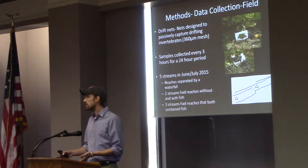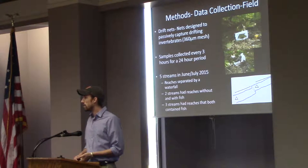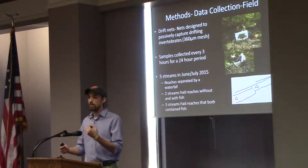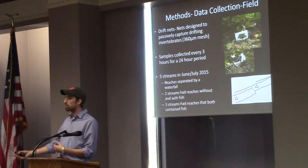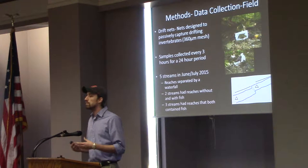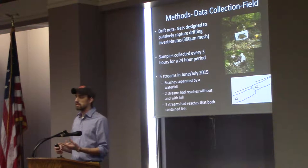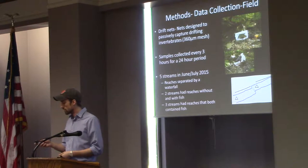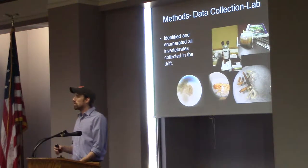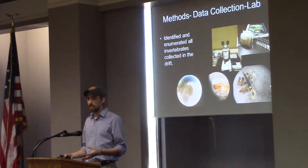We had five streams — we were going for six, but later in the season everything went dry, so we lost our sixth stream. Because there's a waterfall, we had some streams with fish downstream and fish upstream of a waterfall, to collect information on whether the waterfall itself was causing an effect on bug drifting. We had two reaches that were fishless, unfortunately, so it's not a really balanced model. We take all the organic material and bugs in bags back to a lab and start picking through the organic material and identifying bugs.